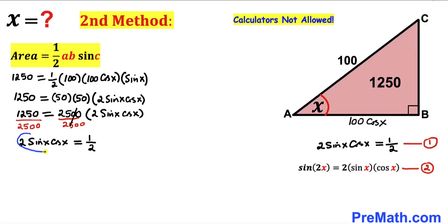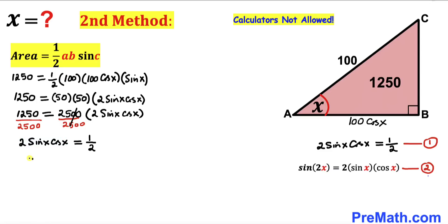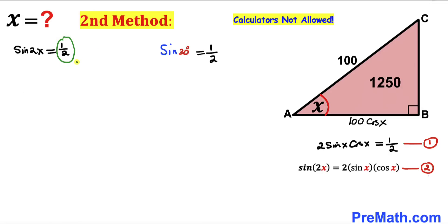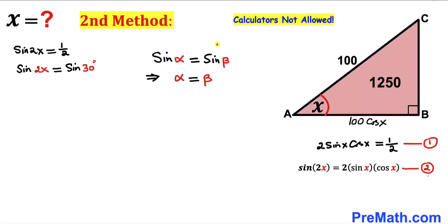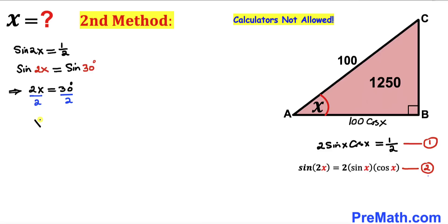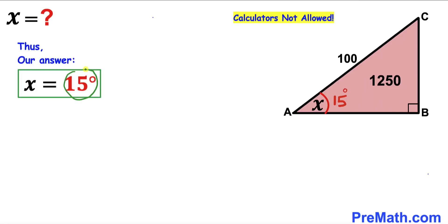Observing that 2 times sine of x times cosine of x equals sine of 2x from equation 2, we substitute to get sine of 2x equals one half. Since one half equals sine of 30 degrees, and sine of alpha equals sine of beta implies alpha equals beta, we get 2x equals 30 degrees. Dividing both sides by 2, angle x equals 15 degrees by both methods.